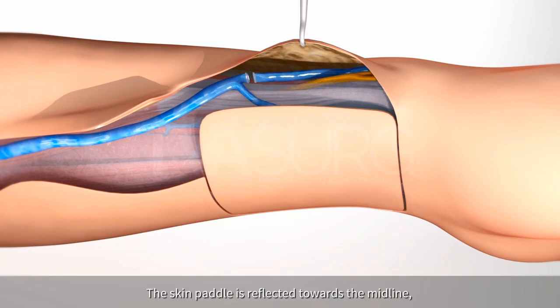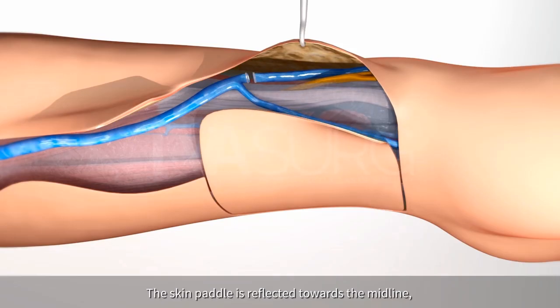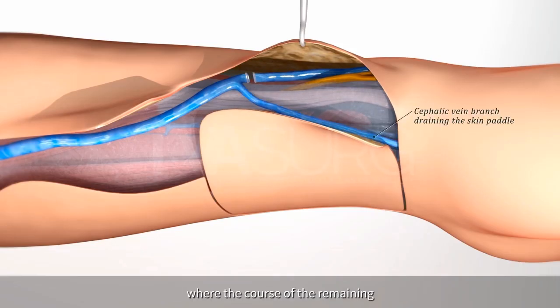The skin paddle is reflected towards the midline, where the course of the remaining cephalic vein branch is traced and divided at the wrist.